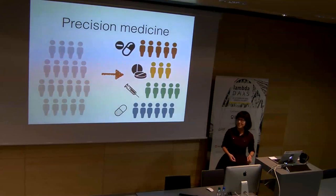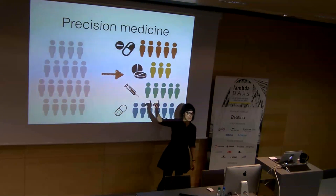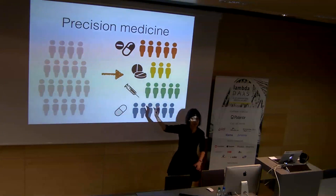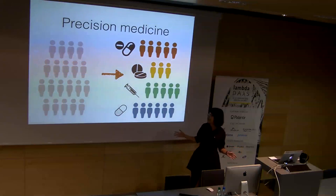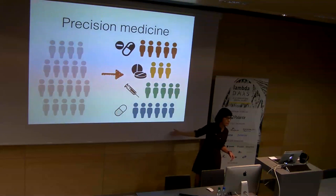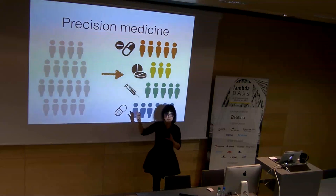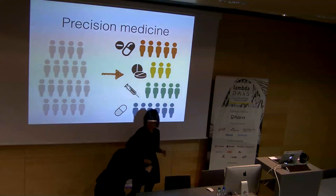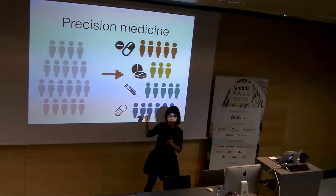Ideally we would like a situation where we get a cohort of patients, they get tested, and based on the result they get a completely different approach and different medicines. For some types of patients they might get surgery and then chemotherapy — the standard approach — while some might get something completely different. My work is about how, from a sample of cancer tissue, we can find out what type of cancer a patient has.